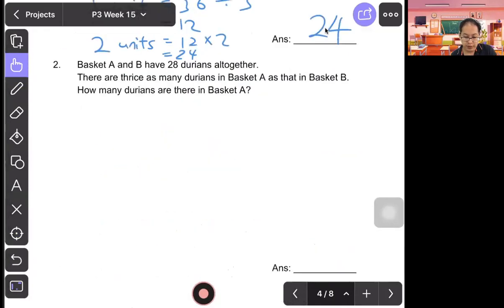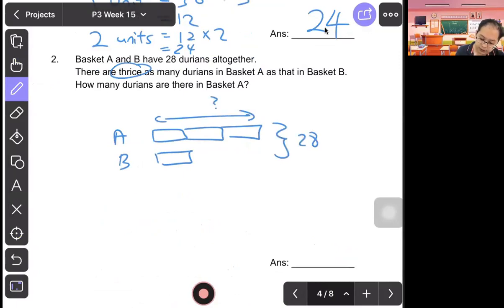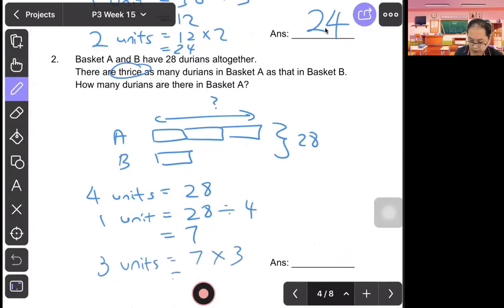Question two: Basket A and B have 28 dolls all together. There are thrice as many dolls in basket A. So three units. So B, how many? All together, they are 28. So they want basket A. So four units equal to 28 dolls. One unit will be 28 divided by 4, which is 7. And they ask for basket A. Three units will be 7 times 3, which is 21. Answer: 21 dolls.